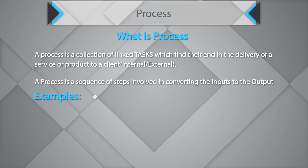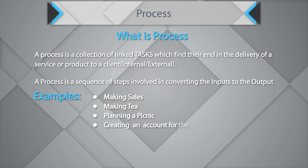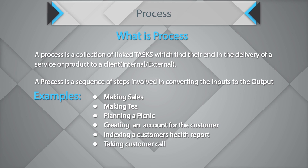Simple things in life like making sales, making a cup of tea, planning a picnic, creating a customer account, indexing a customer health report, or taking a customer call — all of these are processes. A process is a sequence of steps converting input to output. For making tea, based on how much tea is required, you measure water and milk, pour into a pan, light the gas stove, allow it to boil, then add sugar and tea leaves, let it boil, and the tea is ready.